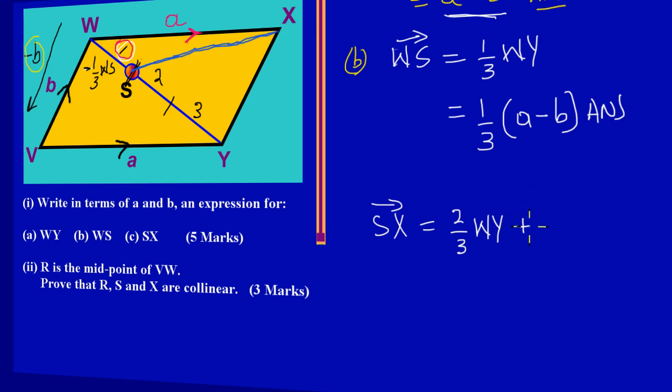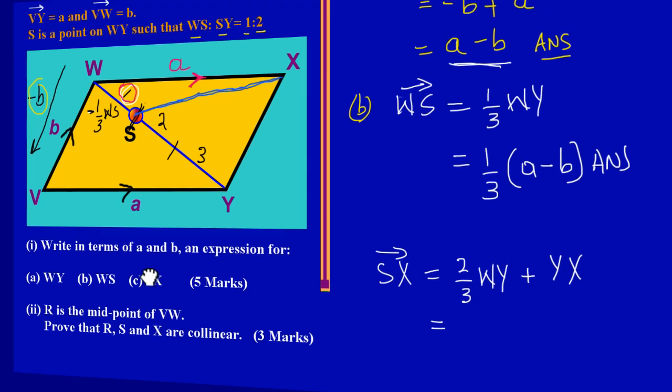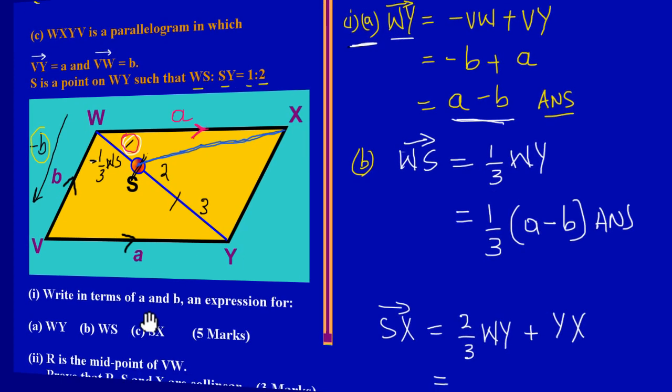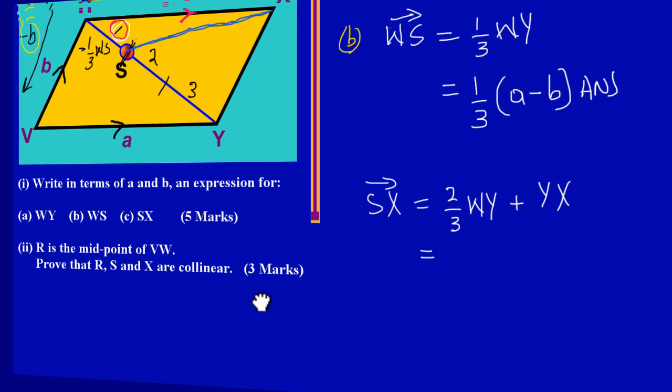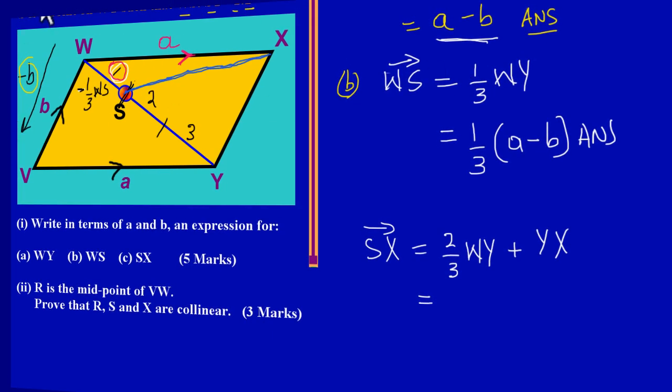That makes sense - W to Y is the whole and we're taking two-thirds of W to Y based on what we discussed in the previous video. Then I'll be moving Y to X, so this would be plus Y to X. This equals two-thirds of W to Y. We calculated W to Y in part A and got a minus b. So by substitution, W to Y is the same as two-thirds of (a - b). We know that Y to X would be the same as positive b.